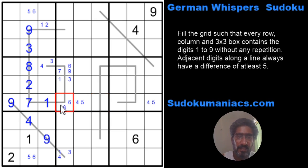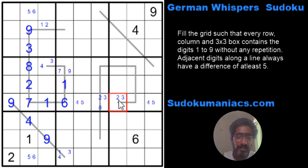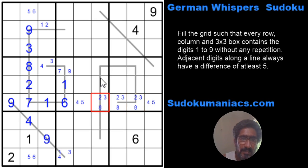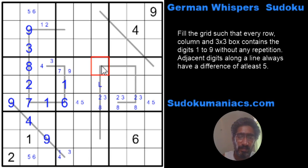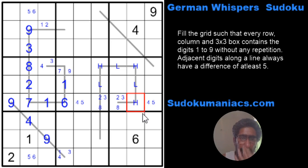A 6 cannot be here, it cannot be here, because I require a 1 which is not possible. 6 can never be in the middle of the path. So the only place for a 6 is here, which makes this a 1 and this a 7 or 9. So I have 2, 3, 8 in three cells. Now assuming if this is an 8, it would make this a low, this a high, this a low, this a high, this a low, and this another high.